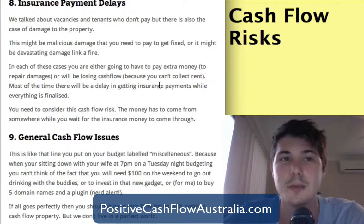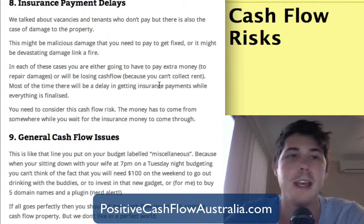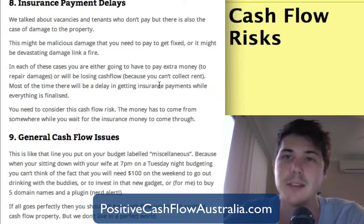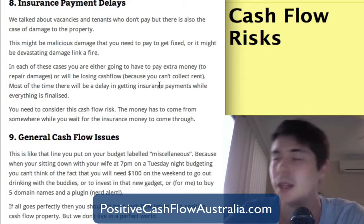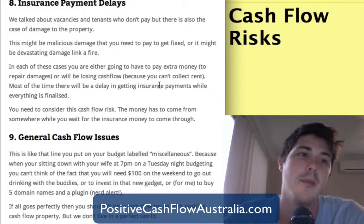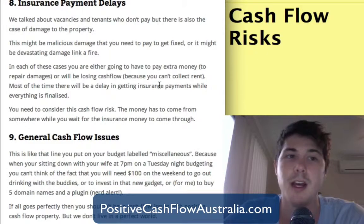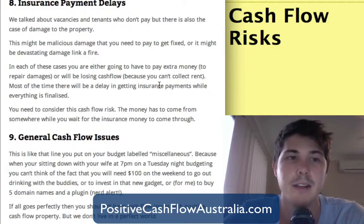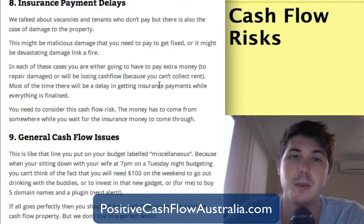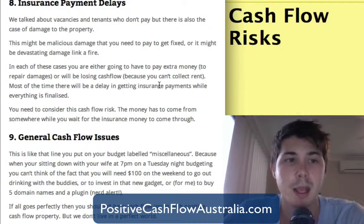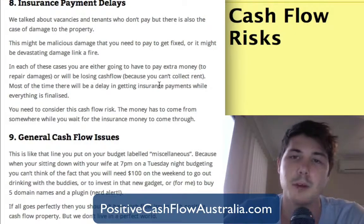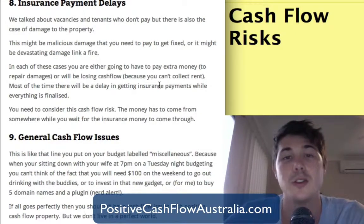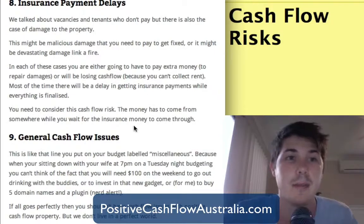Number eight is insurance payment delays. There's always the case of damage to the property — it might be malicious damage needing to be fixed, or devastating damage like a fire. In each of these cases, you're going to have to pay extra money to repair damages over the bond the tenant left, or you'll be losing cash flow because if it's burnt down, no one's going to be living there. You need to consider this cash flow risk and the potential that insurance payment may be delayed.